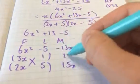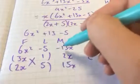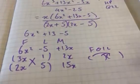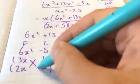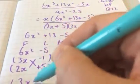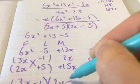2 times 1 would give me 2x. Make sure I get my signs right. I want it to be, sorry, actually positive 13x squared. So I want that one to be positive and that one to be negative. So my two brackets should be 3x minus 1 and 2x plus 5.